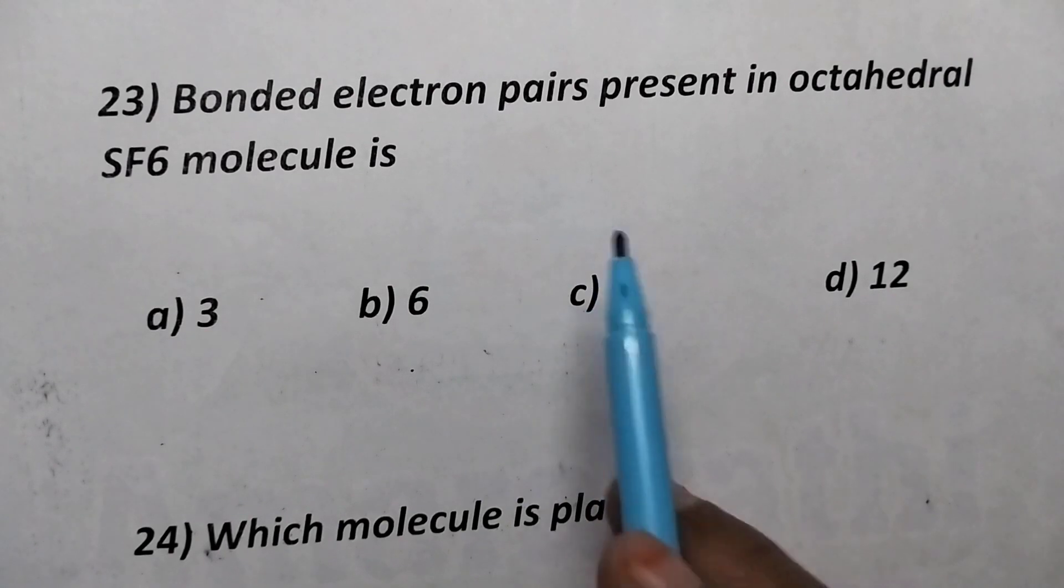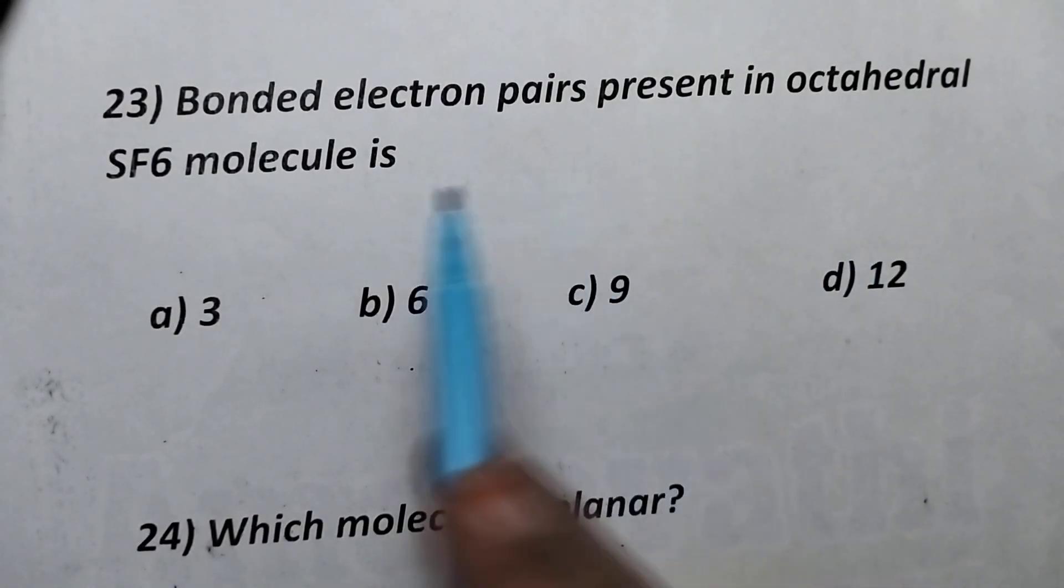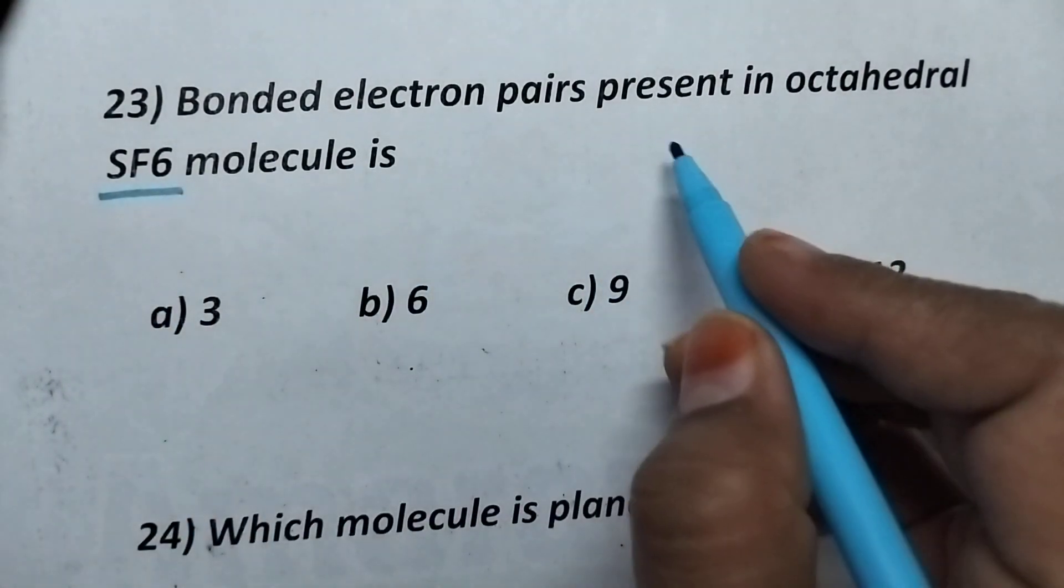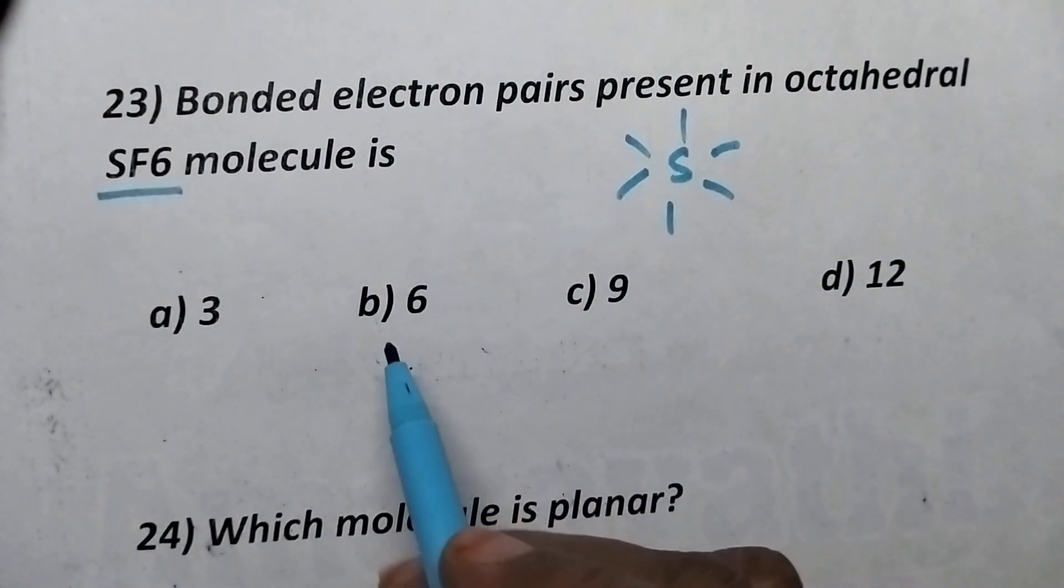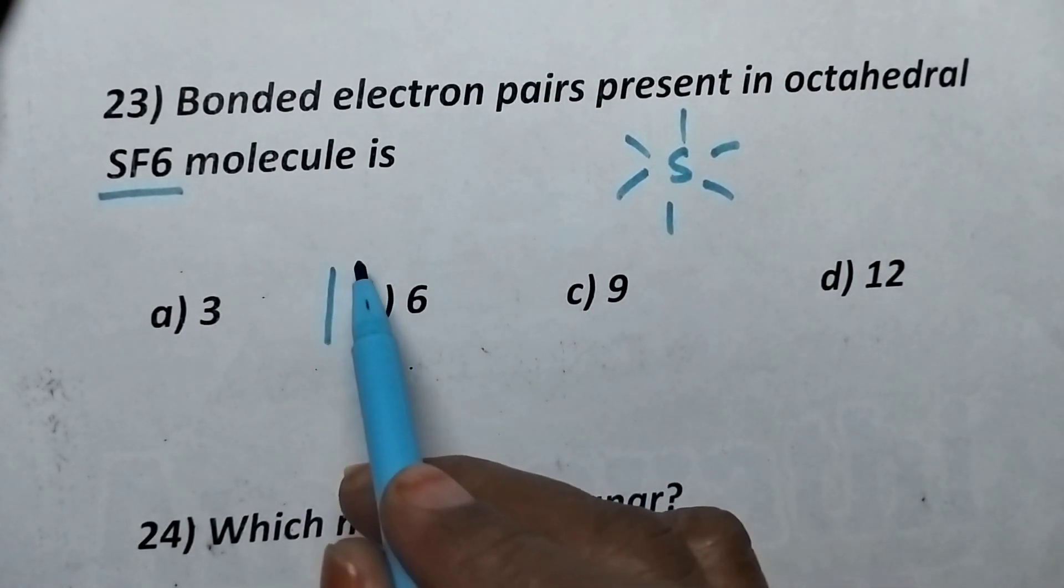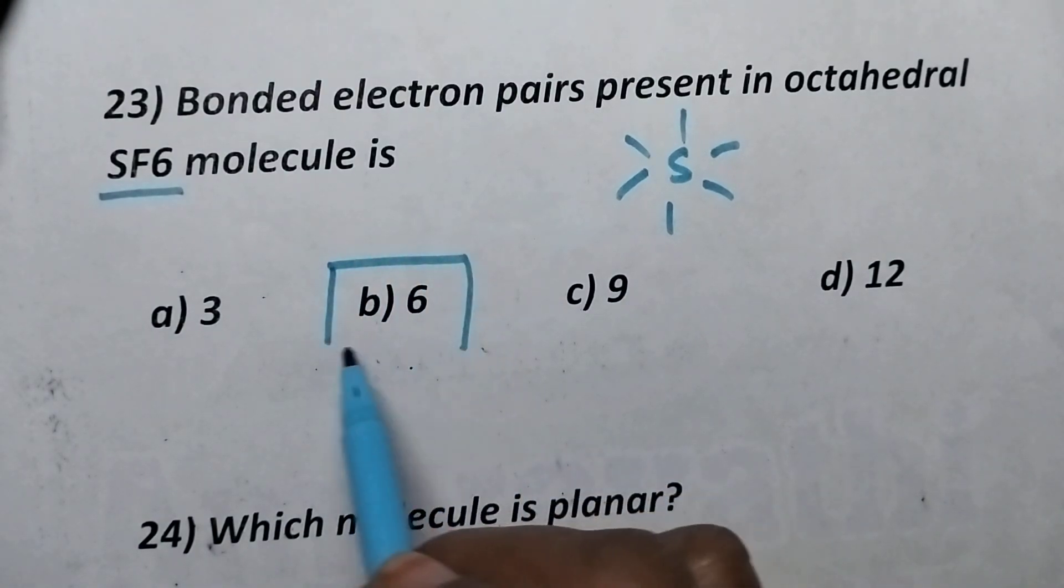Bonded electron pairs present in the octahedral SF6 molecule. So, SF6 molecule contains six bonds and hence, six bonded electron pairs will be present.